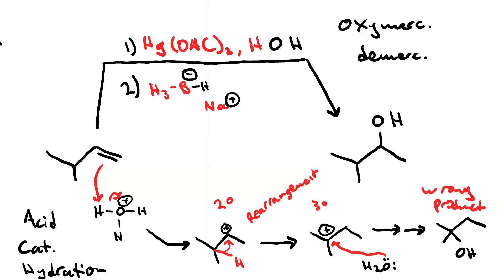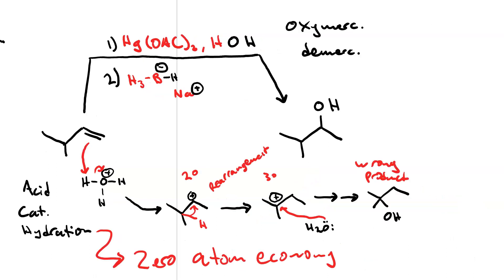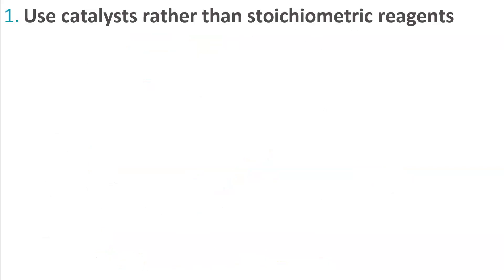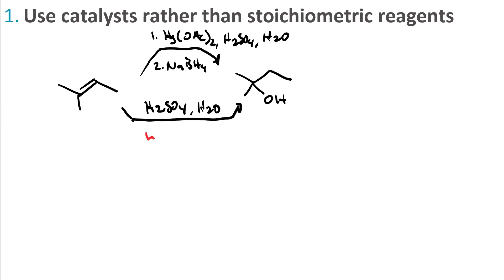So in this case acid catalyzed hydration has essentially zero atom economy because of rearrangement. The point is one synthetic method versus another, if you have to decide what's the greenest it is based on the context. What's best in one situation, acid catalyzed hydration, is actually worse in another when rearrangement is an issue. The superiority of acid catalyzed hydration over oxymercuration demercuration for Markovnikov hydration when there is no possibility of rearrangement demonstrates the principle that catalysts are better than stoichiometric amounts.